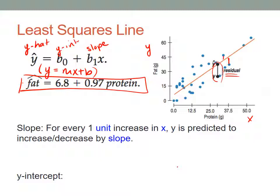What we know is that when we try to predict fat from protein, the y intercept is 6.8 and the slope is 0.97. For slope, what you're saying is for every one unit increase in x, as x increases by 1, y is predicted to increase or decrease depending on the scatter plot by whatever the slope is. That's generally how you'll describe slope all the time.